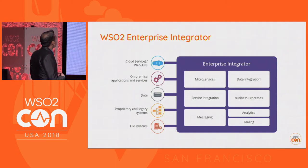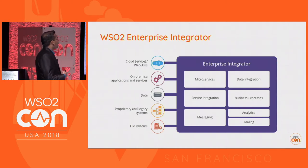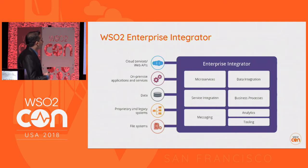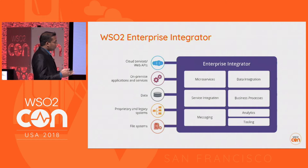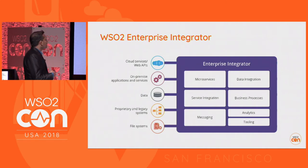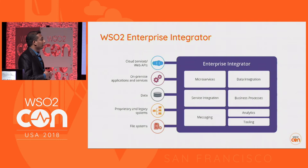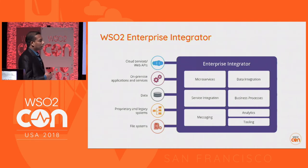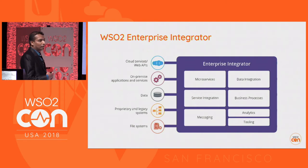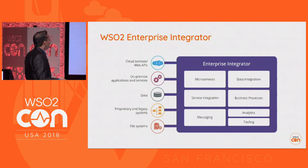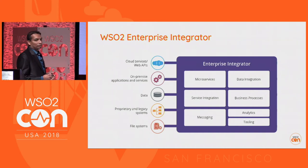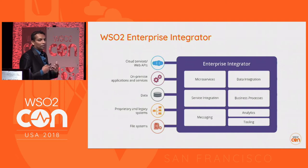Here's the structure of Enterprise Integrator. It has several key areas: service integration (essentially the ESB part), data integration (the data services capabilities), and business processes for long-running stateful integration, among other areas. By combining all these key areas, we can build any kind of integration solution.